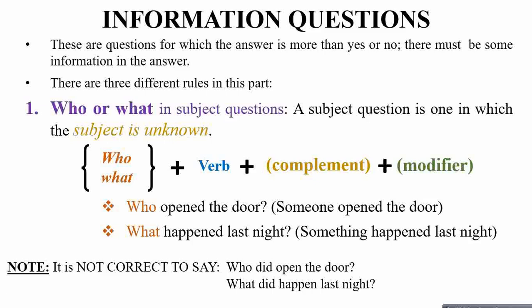Similarly, 'What did happen last night?' is incorrect. You should not use DID to make such subject questions. Using the second form of the verb — 'opened' or 'happened' — is how you indicate that you are asking about a past event.